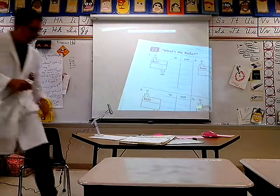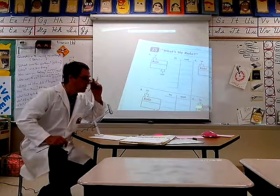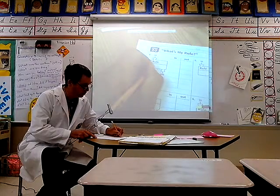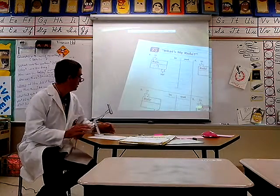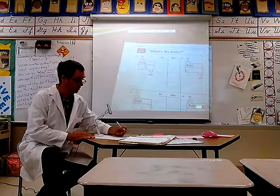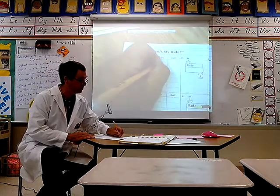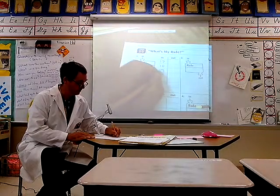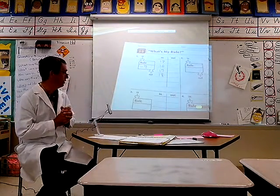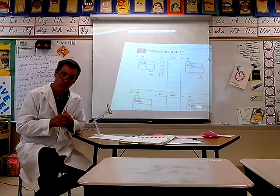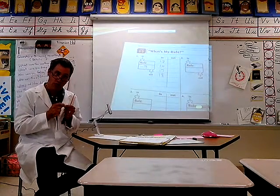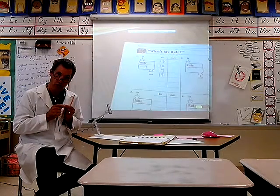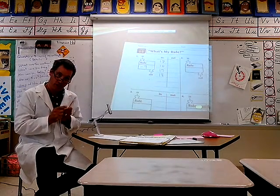This first machine, we could say that the rule is subtract 9. That is our rule, and we know the inputs on this rule. The inputs are 13, 10, 17, and 18. We know the rule, we know what's going into the machine, and now we must figure out what's coming out of the machine.